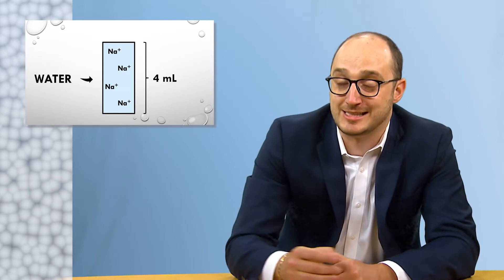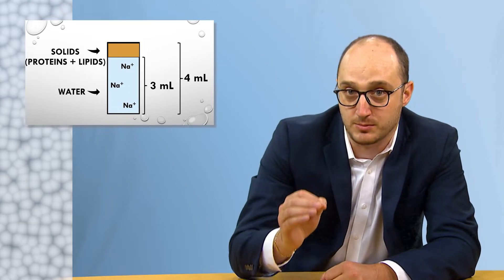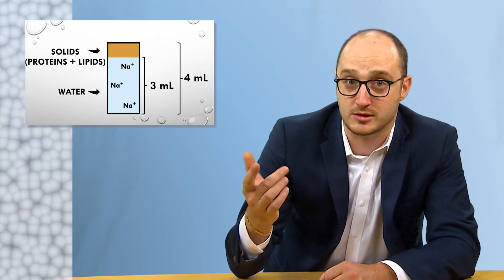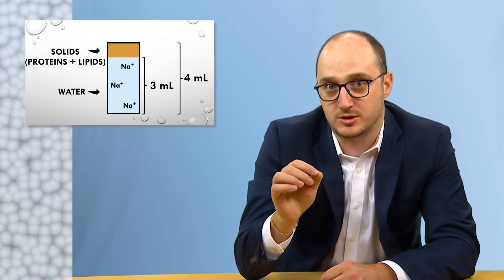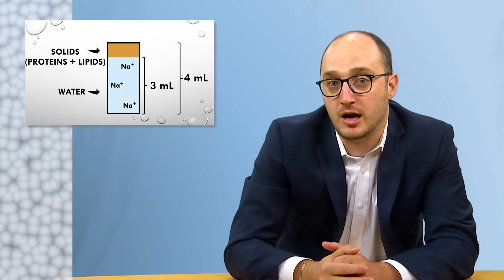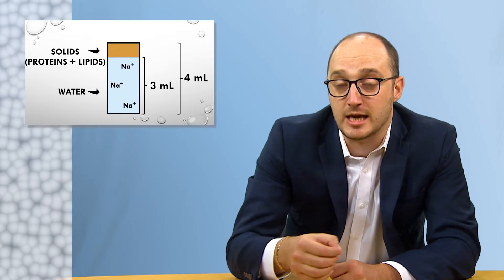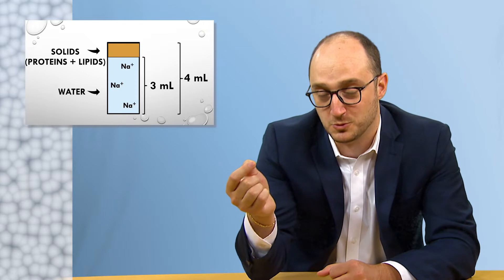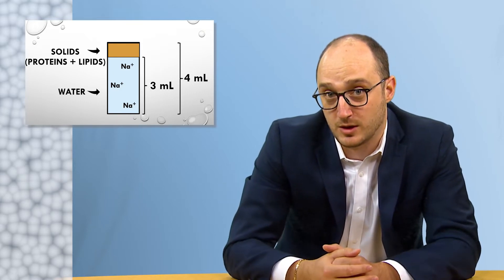Now let's take a different solution, one with the same concentration of 1 ion per ml, but that has 3 ml water and 1 ml solids like lipids or proteins. Because electrolytes like sodium are only distributed in the water fraction, we will have less total ions in the tube — 3 ions — but in 3 mls of water. If I drop an electrode in this solution, it also will read 1 ion per ml, because electrodes only measure ion activity in water.